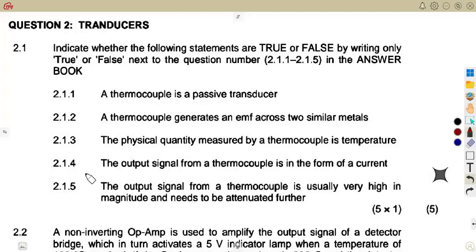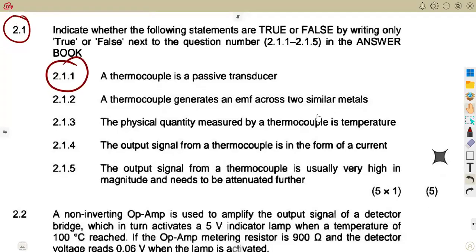Let us consider another question which is on transducers, August 2023 exam, question number two. Considering 2.1, you're given to indicate whether the following statements are true or false by writing only true or false next to the question number. Alright, 2.1.1: a thermocouple is a passive transducer.